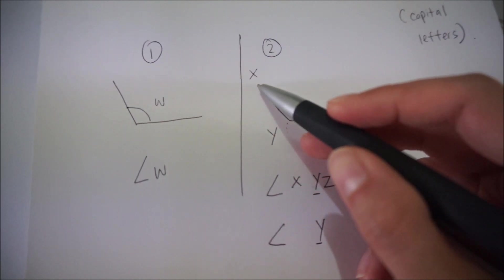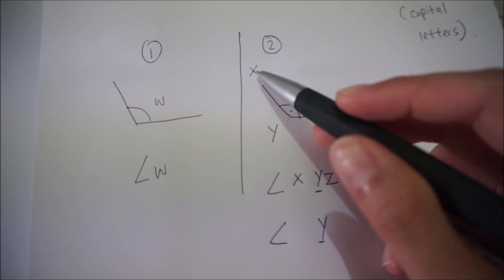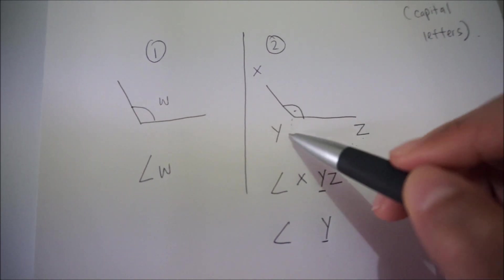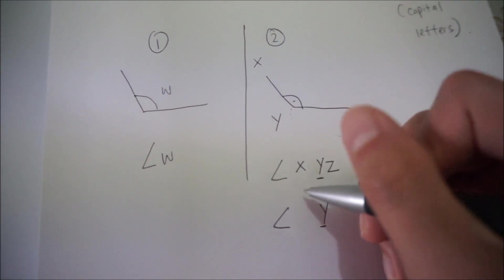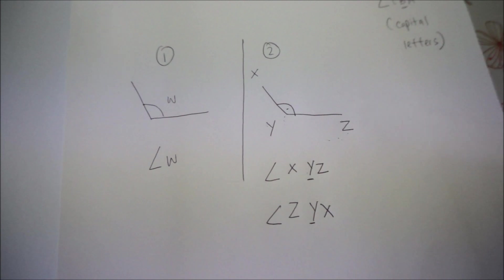Y must be in the center. So instead of calling it x, y, z, you can call it z, y, x. So these are two ways of naming angles.